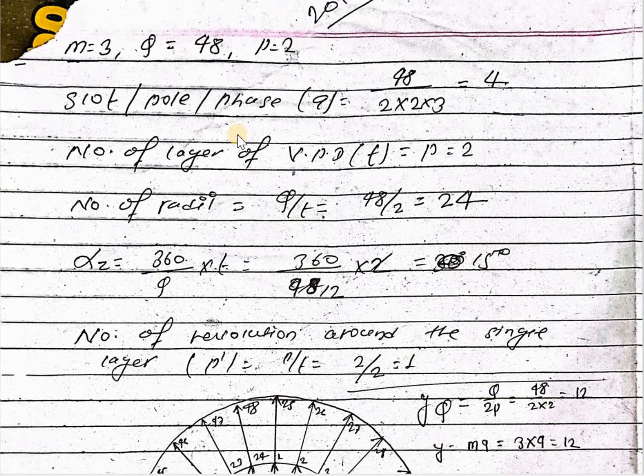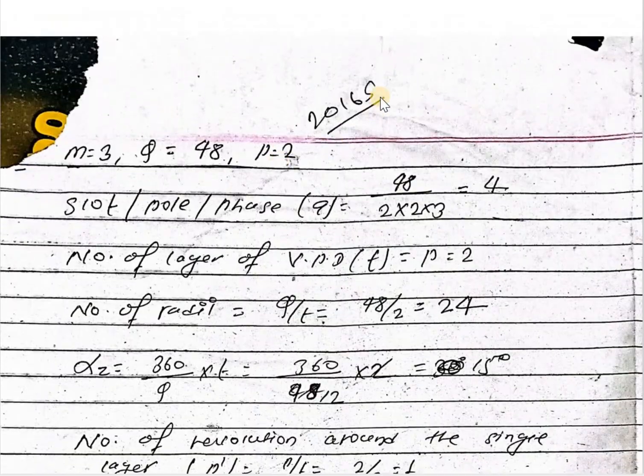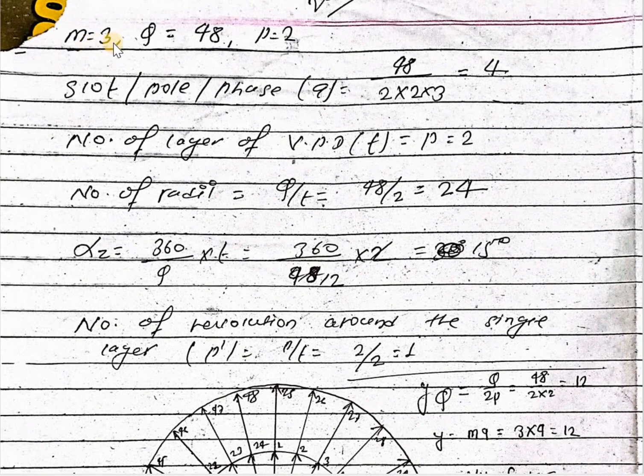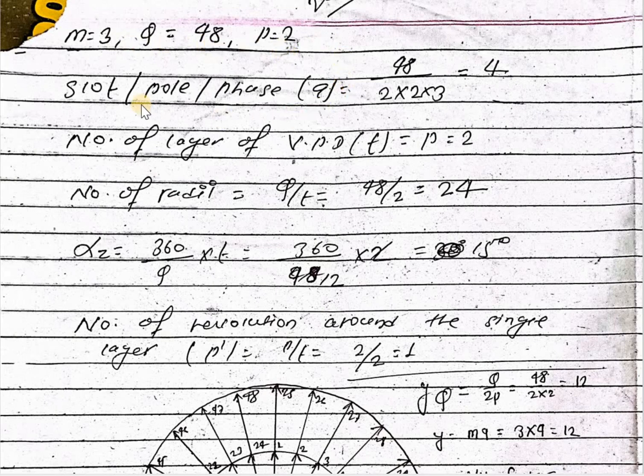Welcome to America's page of machine design. This question is asked in 2016 S-Pilling of Poker University and the question given: m equal to 3, q equal to 48, and p equal to 2.